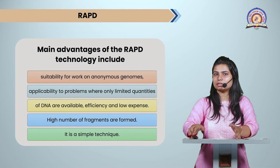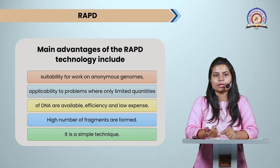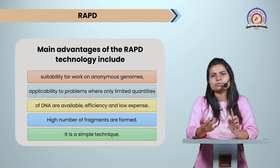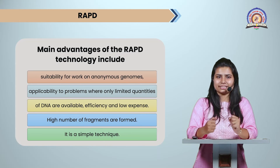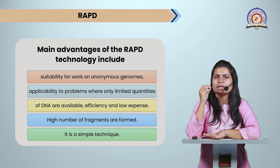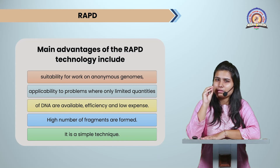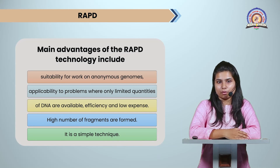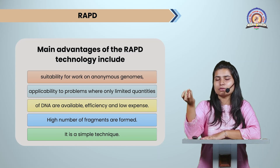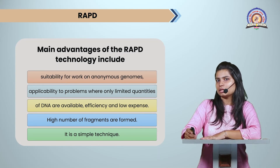The main advantages of RAPD include: suitability for work on enormous genomes; capability to work where unlimited quantities of DNA are available; it is very efficient, less expensive, and less time-consuming; it needs only a small amount of sample — even small quantities are sufficient; a high number of fragments are formed; and it is a simple technique where the PCR machine does the work automatically, so you don't need to monitor every step.